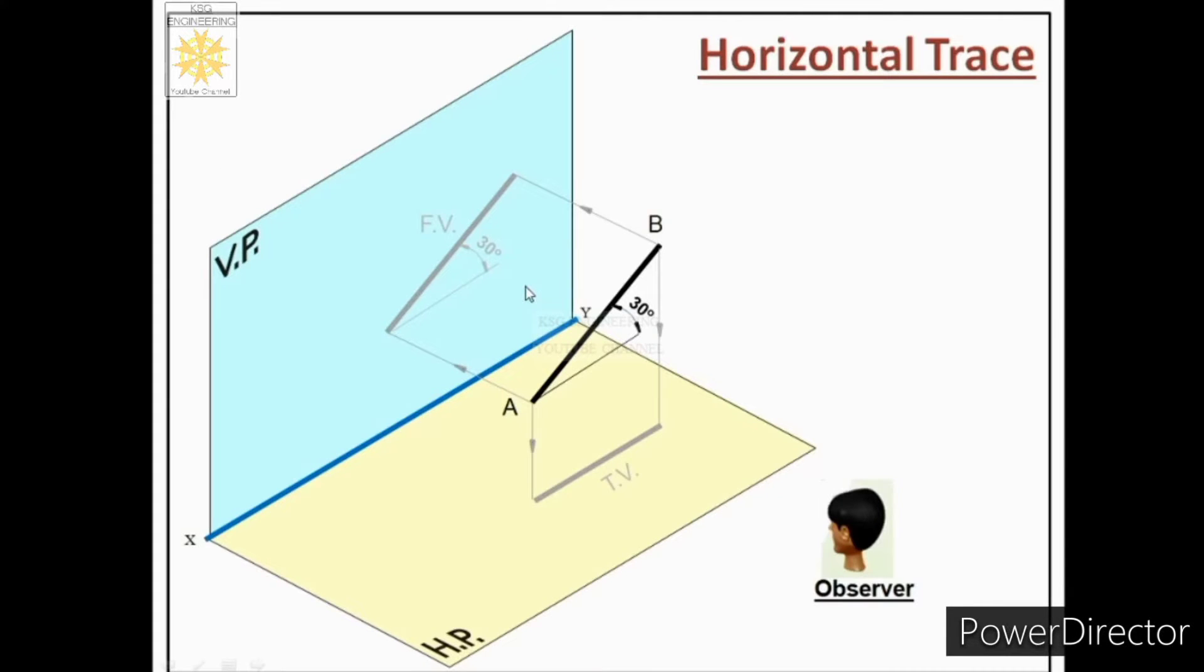Now let us understand trace of a line through an example. Let us first talk about horizontal trace. You can see over here in this example that line is shown inclined to HP. If we will extend this line...